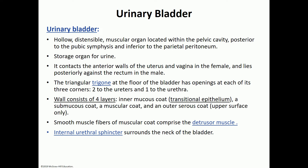Now, the urinary bladder is a muscular, hollow organ that has the ability to distend, so it has a lot of elastic tissue. It's found in the pelvic cavity right behind the symphysis pubis, and it is inferior to the parietal peritoneum, which means it is not a peritoneal organ — it is outside the peritoneal sac.